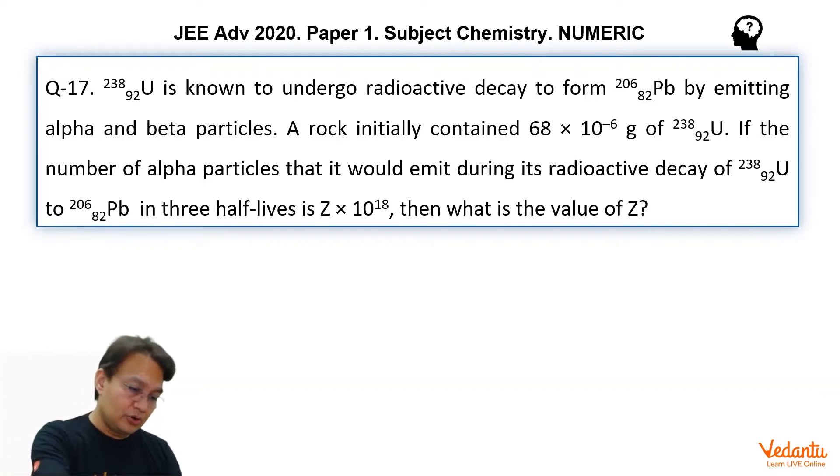So how to solve this problem? Let's see a few steps. First, let's collect what to do in this problem. First of all, you must calculate that 238-92 uranium, when it changes to 206-82 lead, how many alpha particles it will emit? First thing, we will calculate that. To calculate that, we will have to find the difference in mass number.